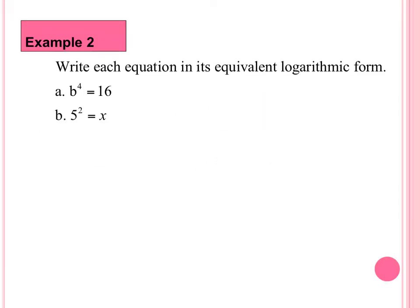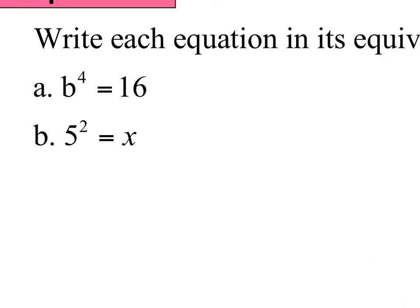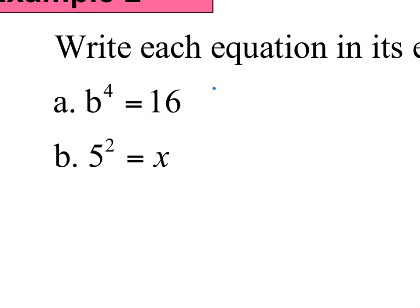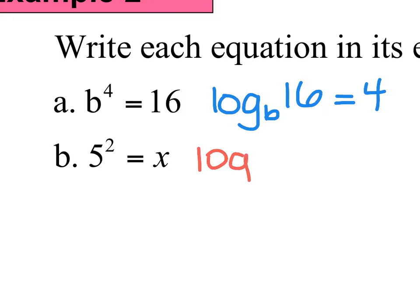Example 2 is the other way around: write each equation in its equivalent log form. So this is in exponential form and we want to put it into log form. For A, B is the base, so this is log base B. 16 comes across with the B, equals 4 goes on the other side. And for B, log 5 is the base, X comes over with the 5, 2 gets bumped to the other side.